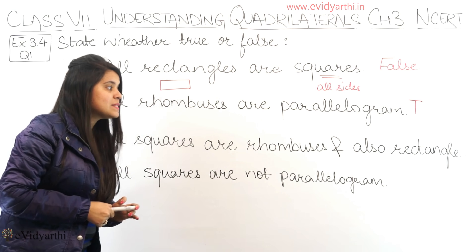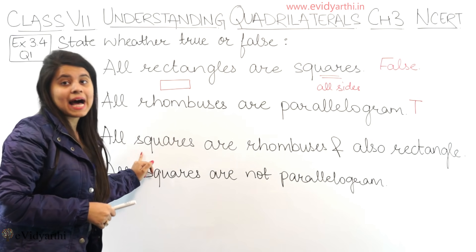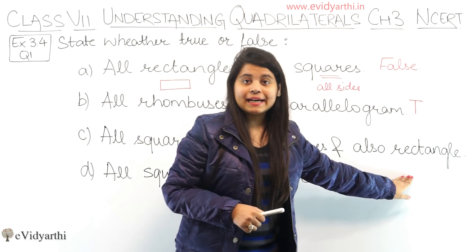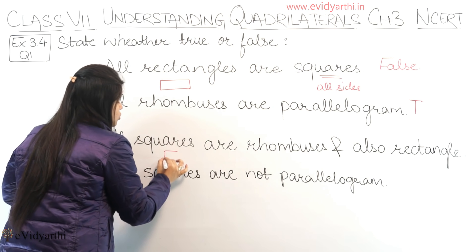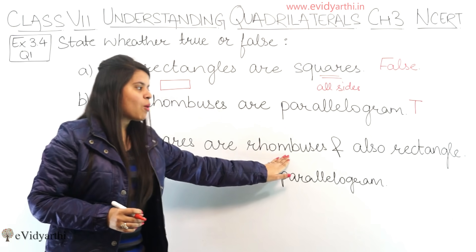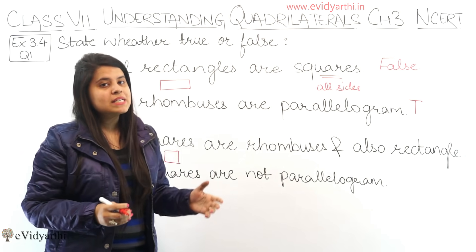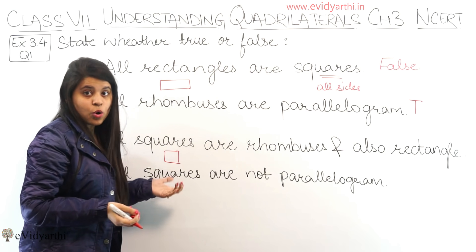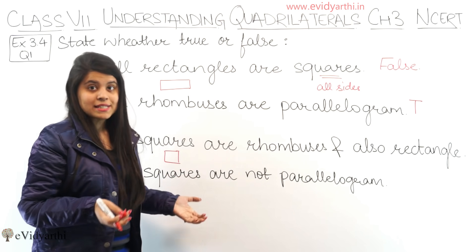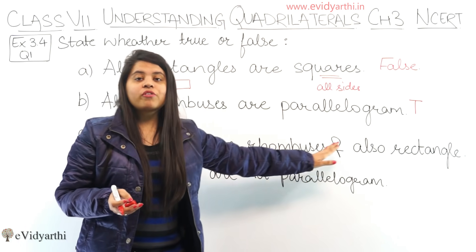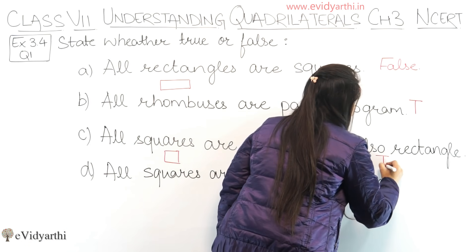Moving to the next one: all squares are rhombuses and also rectangles. This is true. A square can have properties of both a rhombus and a rectangle. The rectangle property — opposite sides are equal — applies here. The rhombus property — all sides are equal — also applies here. So a square fulfills properties of both rhombus and rectangle. This statement is true.